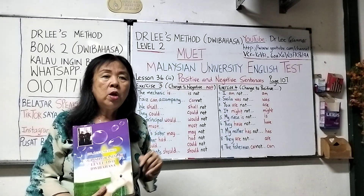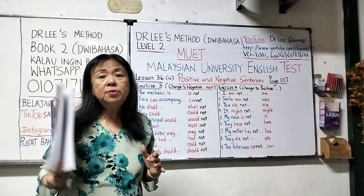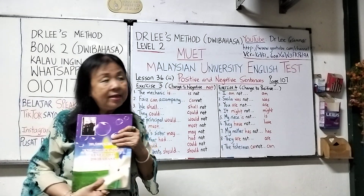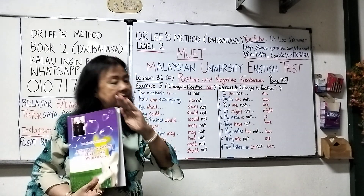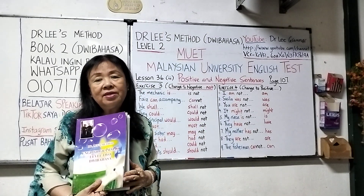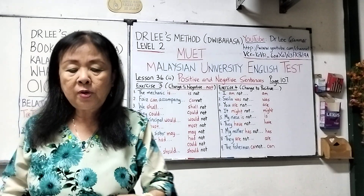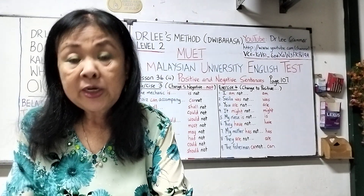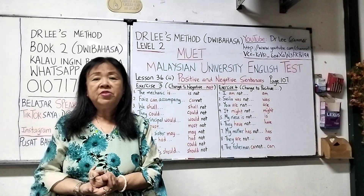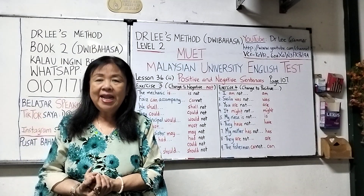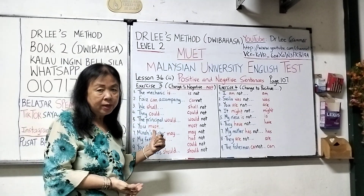We are actually coming to the end of this book, because this book has 40 lessons and we are at lesson 36 — meaning we have four more lessons before I close the curtain. This book is already completely uploaded in my channel, from the first page to the last page, every question, every page, every lesson is in my channel. Let us now start.